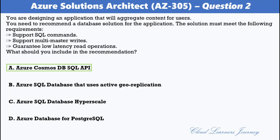With Cosmos DB's multi-master writes replication protocol, every region supports both writes and reads. The multi-region writes capability also enables unlimited elastic write and read scalability, with 99.999% read and write availability all around the world.